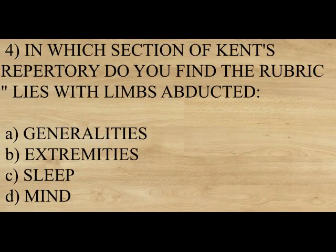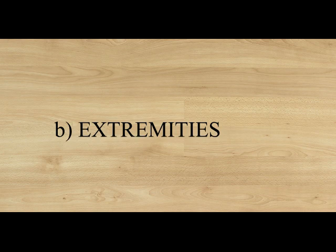In which section of Kent's repertory do you find the rubric 'lies with the limbs abducted'? Option A: Generalities. Option B: Extremities. Option C: Sleep. Option D: Mind. The answer is Option B, Extremities. The medicine for 'lies with the limbs abducted' is Chamomilla. The other two medicines are Psorinum and Sulphur. Don't forget: lies with limbs abducted — Chamomilla, Psorinum, Sulphur.